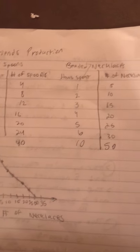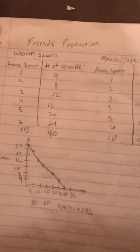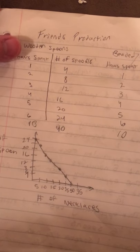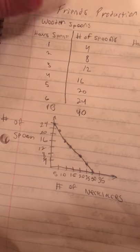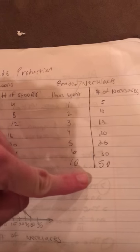So it takes him a little longer to make necklaces, but he makes spoons a lot faster than I do. So at a 10-hour workday, he makes 40 spoons. At a 10-hour workday, he makes 50 necklaces.